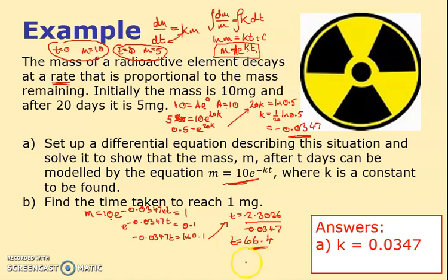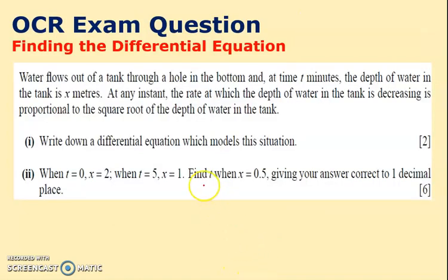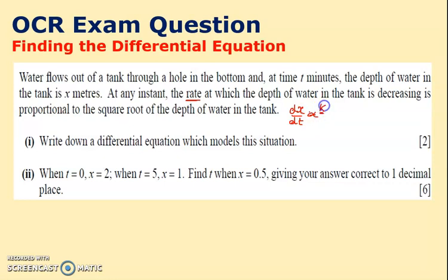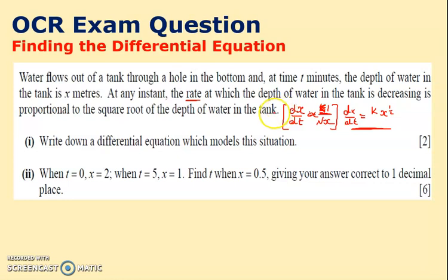A new question: water flows out of a tank through a hole in the bottom. At time t, the depth of water is x metres. The rate at which x decreases is proportional to the square root of the depth, so dx/dt equals k over √x, or equivalently k times x^(−1/2). We're given t equals 0 when x equals 2.